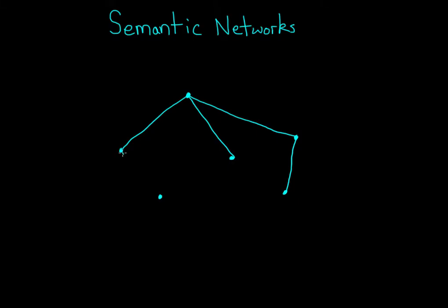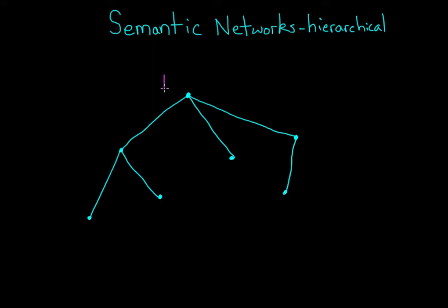Let me show you an example to make this a little more concrete. The first semantic network model was hierarchical, meaning that concepts were organized from higher order categories down to lower order categories and their exemplars. So let's start with a general category: animal. That's this node here. Animal might be linked to other nodes, such as bird or fish.